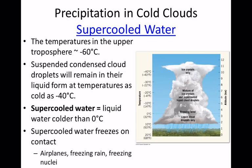One of the things I want to convince you of is it's quite possible, even in the summertime, that you have precipitation that falls as rain but started out as snow. In order to talk about the snow formation process, I need to introduce this concept of super-cooled water, and you've probably seen it before.